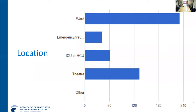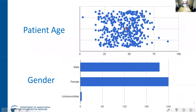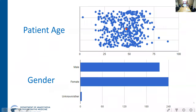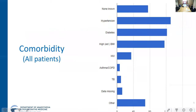Looking at patient demographics, there's quite a broad range in terms of patient age — a slightly skewed bell shape with patients mostly sitting between 50 to 60 years of age. With regards to gender, statistics are slightly skewed towards female — probably reflective of the fact that we're doing a lot of cases in maternity, which are obviously all female patients, so this isn't specific to patients being intubated for ICU. With regards to comorbidities, there's a significant number of patients with no known comorbidities, but then the usual suspects: hypertension, diabetes, and high BMI.